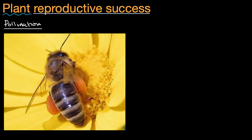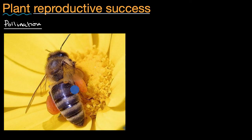You have seen pollination. This is a picture of a bee gathering nectar from this flower. But as it gathers that nectar, pollen also gets attached to that bee. So as that bee goes from flower to flower, from plant to plant, it's able to pollinate.